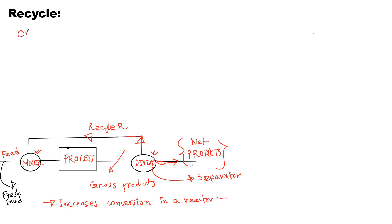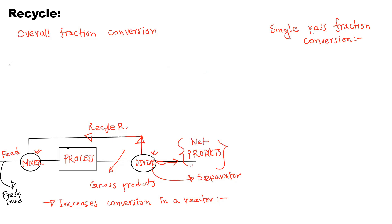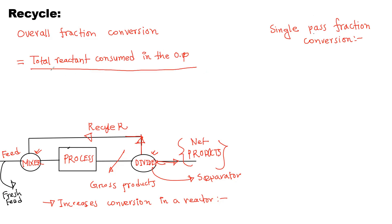There are two terminologies: overall fractional conversion and single-pass fractional conversion. Overall fractional conversion is defined as the total reactant consumed in the overall process divided by the reactant fed through the fresh feed.